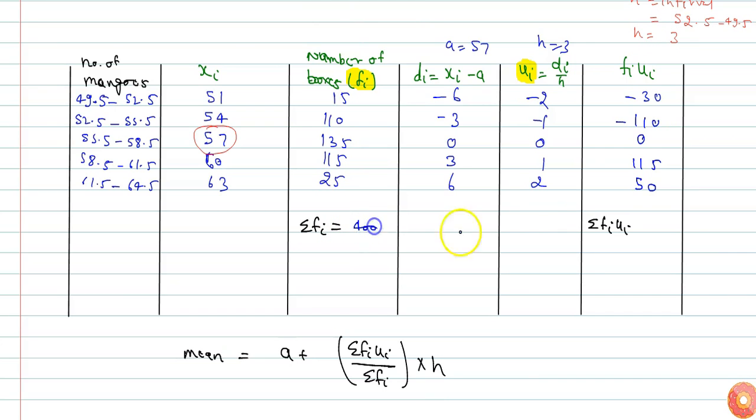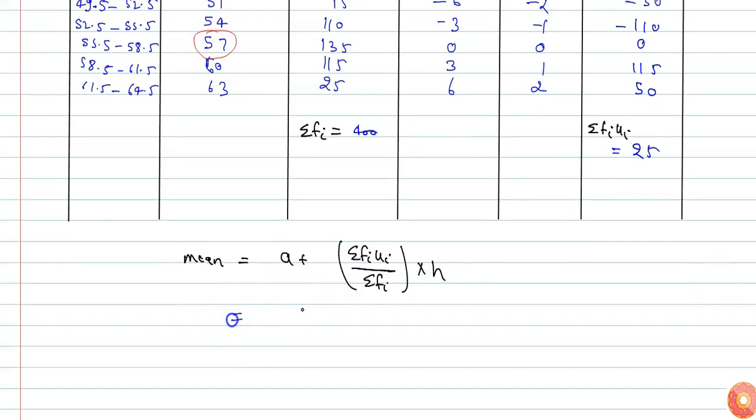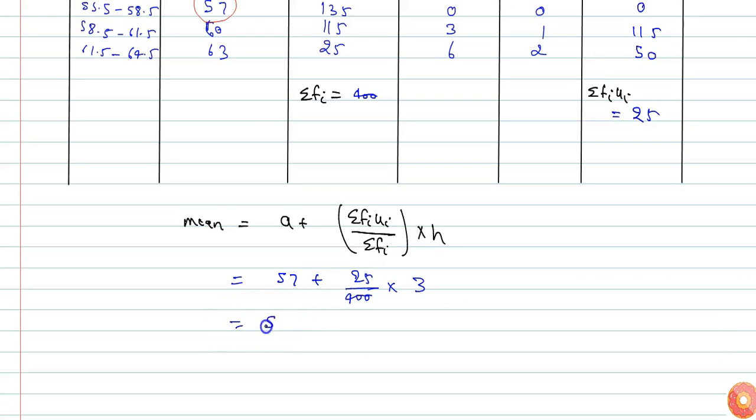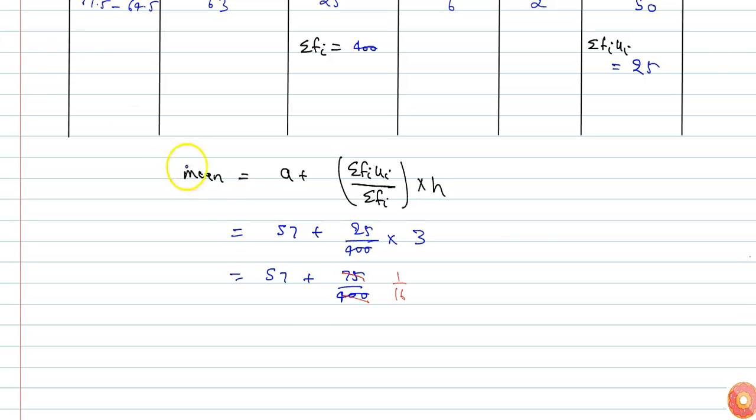Here summation fi is 400 and summation fi ui is 25. So assumed mean is 57. So 57 plus 25 by 400 into h is 3. So from here I can write 57 plus 75 by 400, which is 1 by 16.